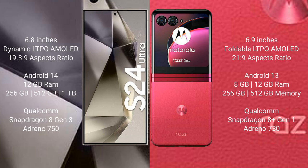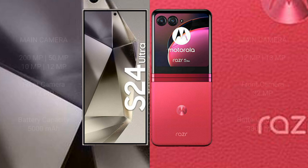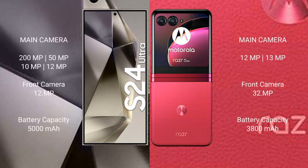Samsung Galaxy S24 Ultra rear-side quad camera setup: 200MP plus 15MP plus 10MP plus 12MP, front camera 12MP. Motorola Razr 40 Ultra rear-side dual camera setup: 12MP plus 13MP, front camera 32MP.